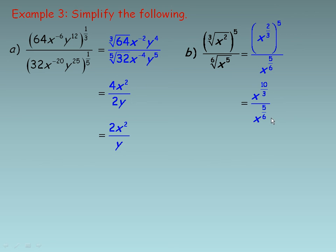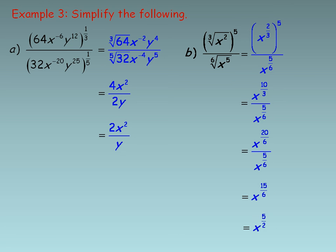To divide these powers of x I need to subtract the exponents, but the denominators are not the same, so I need a common denominator. The common denominator of 3 and 6 is 6, so I multiply 10 thirds top and bottom by 2 to get 20 sixths. Now subtracting: 20 sixths minus 5 sixths is 15 sixths. Simplifying that rational exponent — both 15 and 6 divide by 3 — gives 5 halves. To write this as a radical, the denominator 2 means the square root and the 5 means the power of 5, so the answer is the square root of x to the 5th.